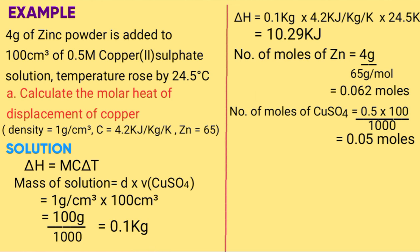From the equation zinc plus copper sulfate gives you zinc sulfate plus copper, the ratio is 1 to 1. So the number of moles to be used is 0.05 moles, because zinc is in excess of 0.012.